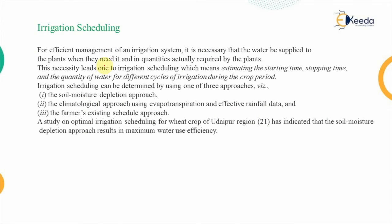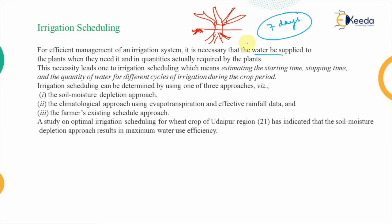Now, what is irrigation scheduling? For efficient management of the irrigation system it is necessary that a sufficient amount of water is supplied to plants. For example, if water is required every seven days and the amount required is 10 centimeters, then for efficient management this amount of water must be supplied at the required time. This necessity — the amount and timing — leads to irrigation scheduling.